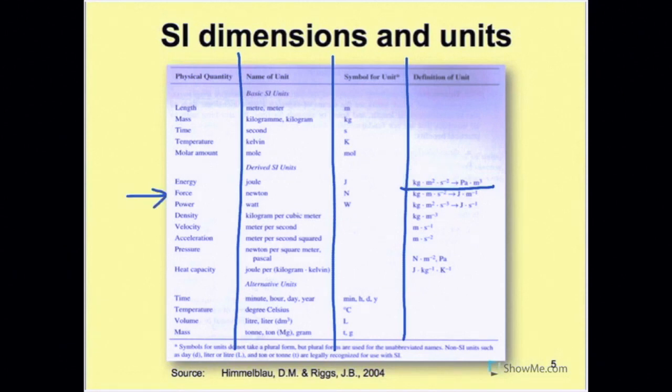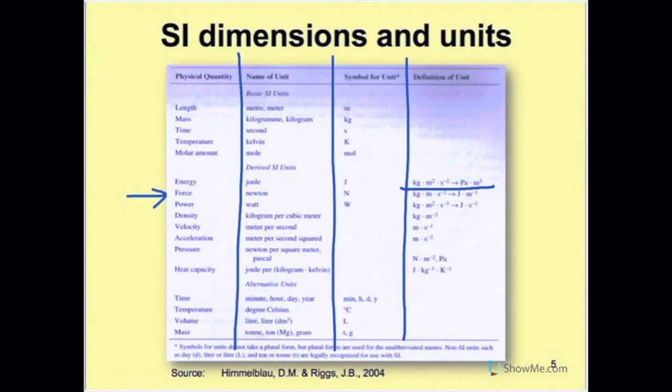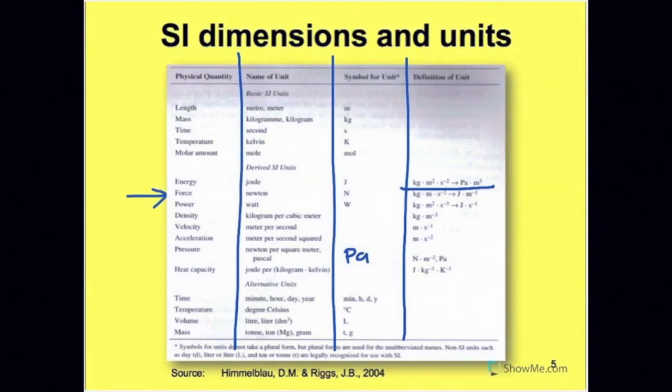For force, the name of the unit is Newton, and the symbol for it is capital letter N. Power is Watt, or capital letter W. Density is kilogram per cubic meter. There's no special name for density. Velocity is meter per second. Acceleration is meter per second squared. Pressure is Newton per square meter or Pascal. There is a special name for it, which is Pascal. They forgot to put it here: P-A, capital letter P-A. Heat capacity is Joule per kilogram per Kelvin.